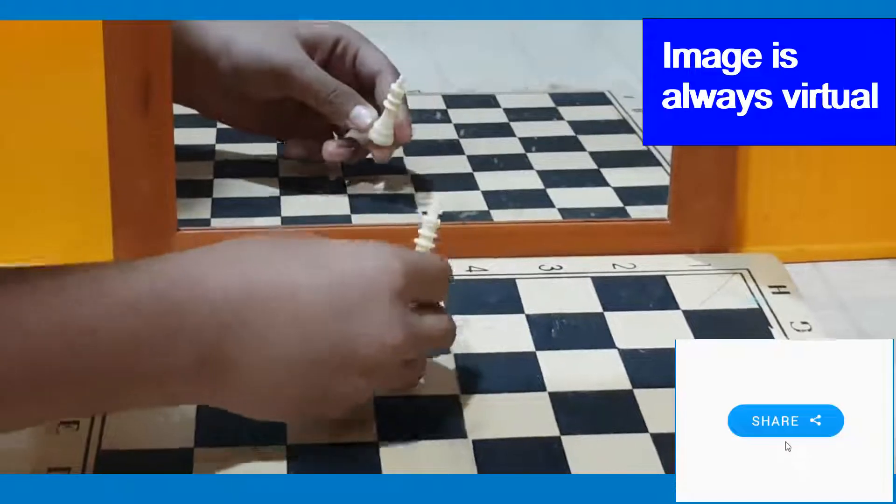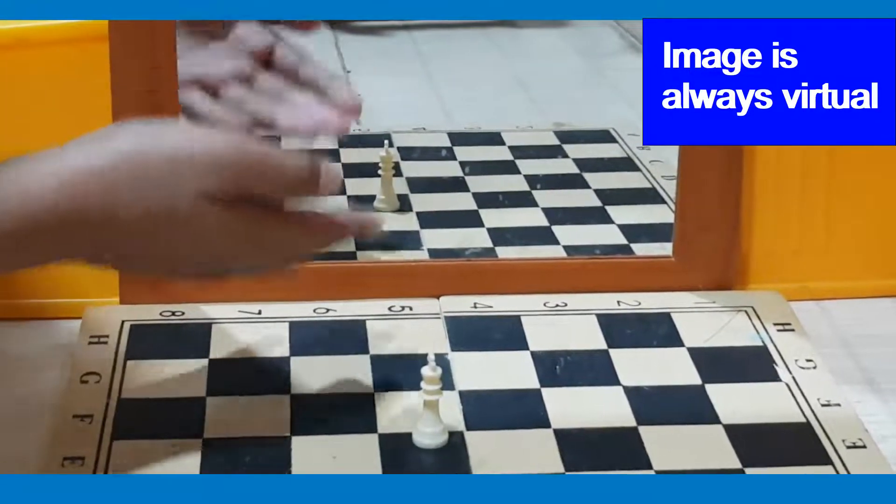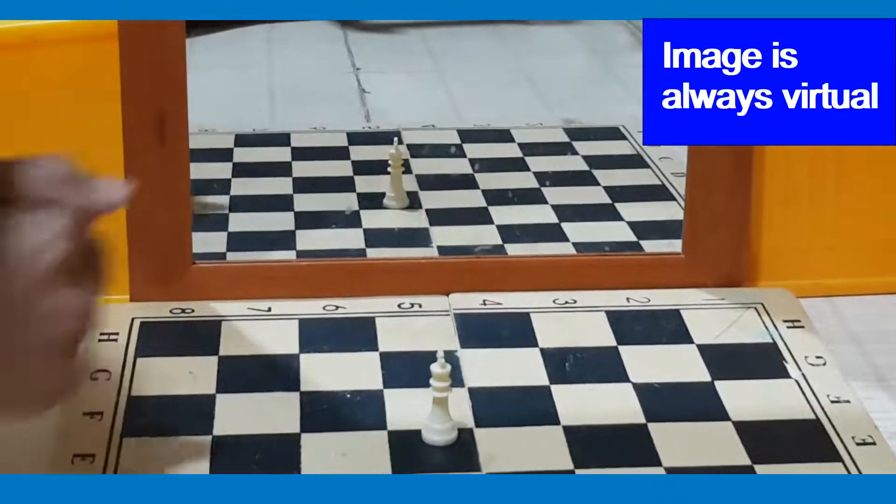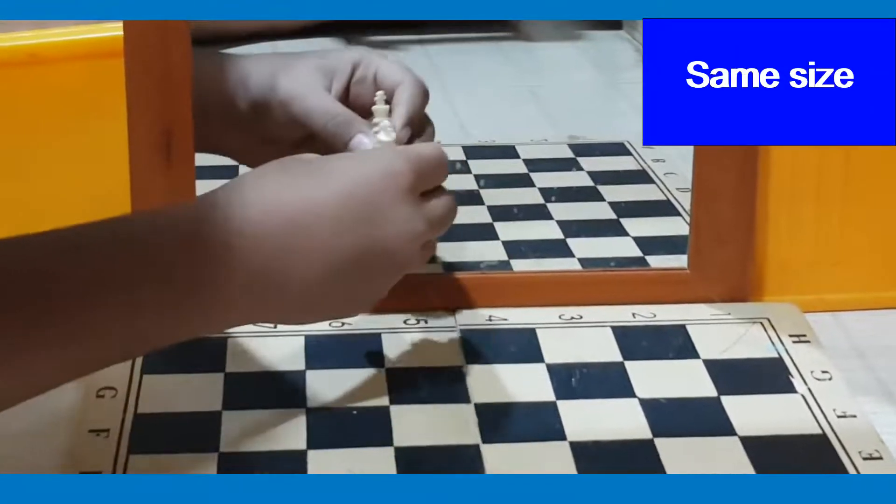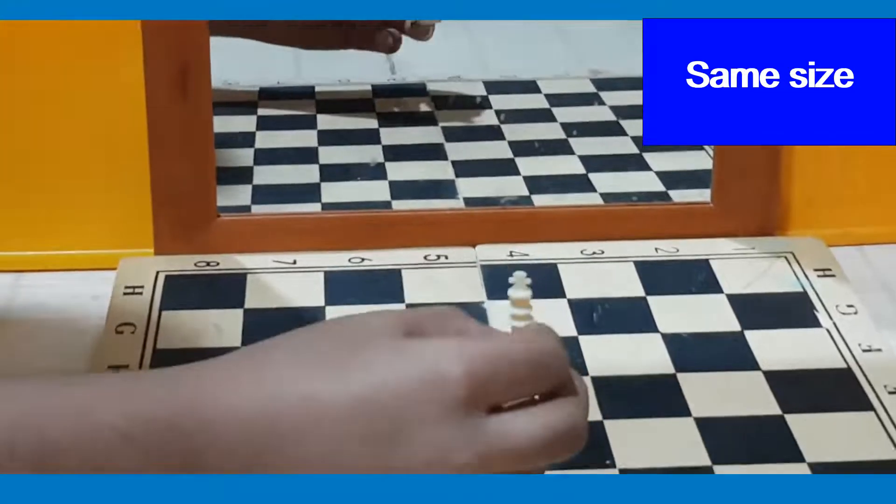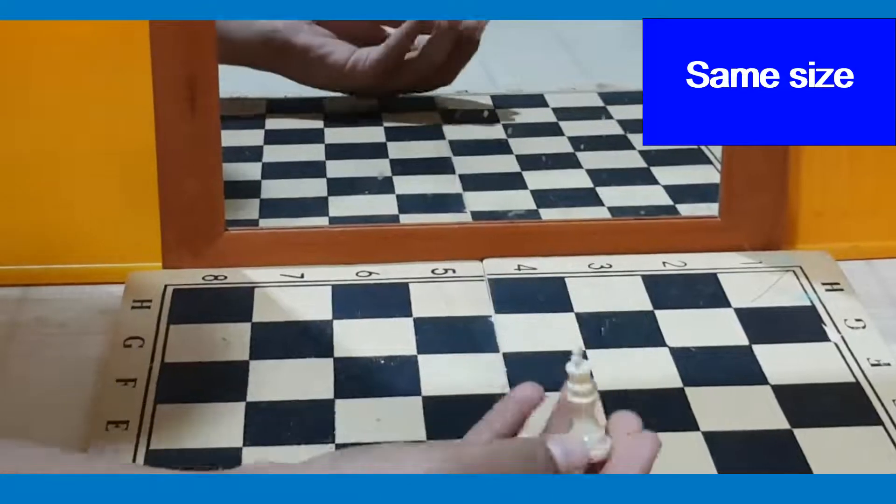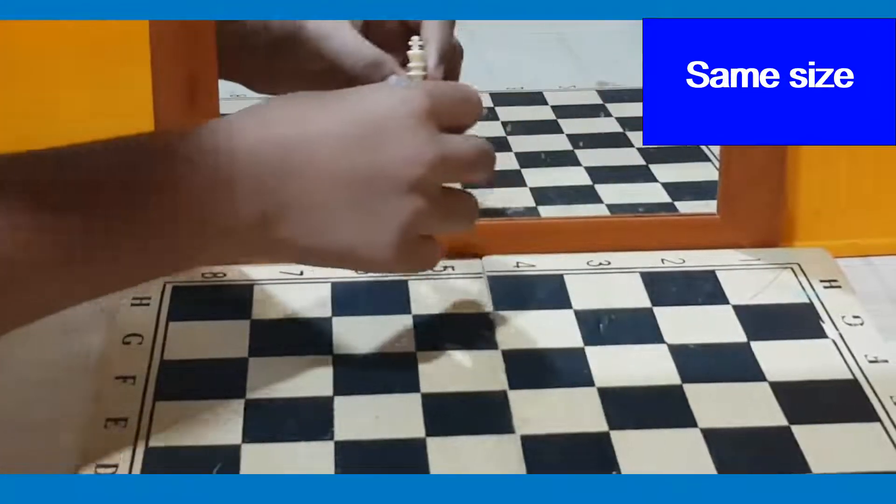The second fact we had learnt was that the image is virtual. So the image formed in the plain mirror you can't project on another screen. Then we learnt that it is the same size. So I bring it very close, I take it far, the image is the same size as the size of the object. No matter where I take it, as you can see it remains the same.